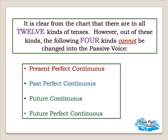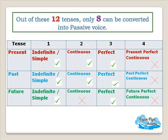However, out of these 12 tenses, the following four kinds cannot be changed into passive voice, meaning only 8 can be converted. Simple present, present continuous, and present perfect can be converted. Similarly, simple past, past continuous, and past perfect can be converted, but past perfect continuous cannot. Simple future can be converted, but future continuous cannot; future perfect can be converted, but future perfect continuous cannot.